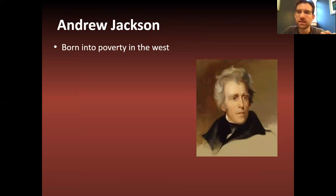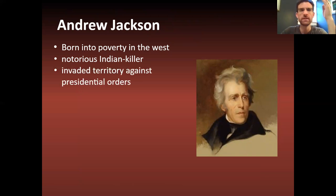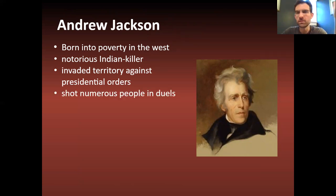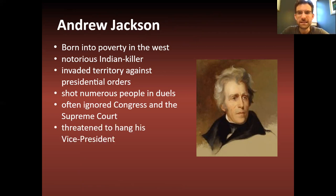Andrew Jackson is wealthy — he owns a big plantation and slaves by the time he's president — but he's not born into that kind of wealth. He's a notorious Indian killer, infamous for killing Native Americans wholesale. He invaded territories against presidential orders. Before he was president, he was a general in the military who would completely disobey orders and go into different territories to invade and kill British, Spanish, and Native Americans in Florida and that area. He was known for killing many people in duels, and his opposition used to call him a murderer — and they weren't that wrong. He'd often ignore Congress or the Supreme Court, threatened to hang his vice president from the nearest tree, and at one point fired his entire cabinet.